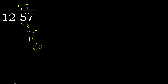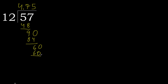Subtract. Complete, complete point — point is here. 60, 12 multiplied by 5 is 60 — 60 is not greater. Subtract: 0.